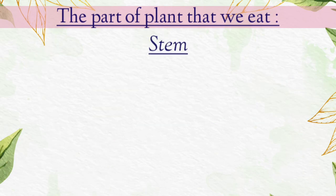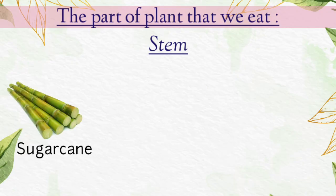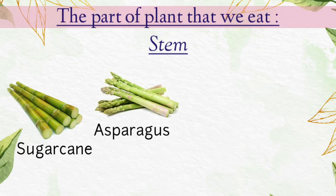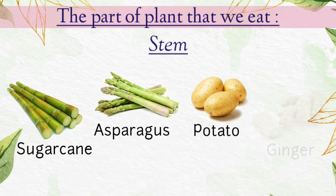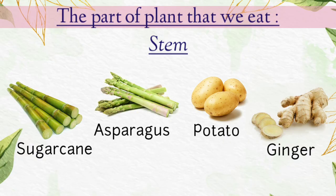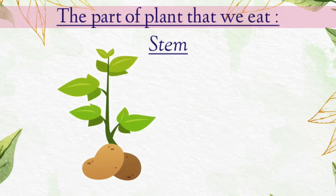Stem. Some plants store their extra food in stem. So the stems that we eat are sugarcane, asparagus, potato, ginger. Children, stems usually grow above the soil, right? But some stems such as potato and ginger grows under the soil.